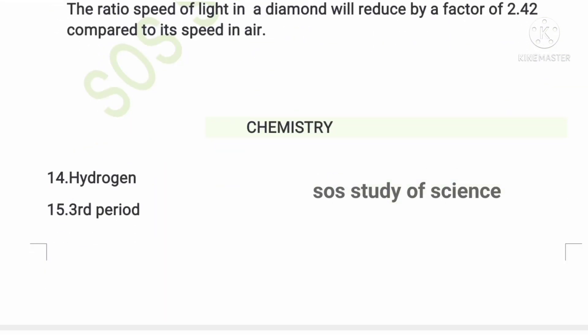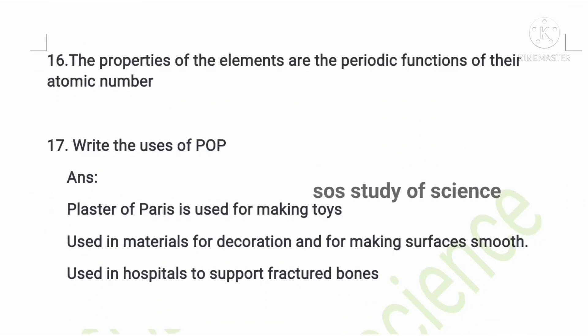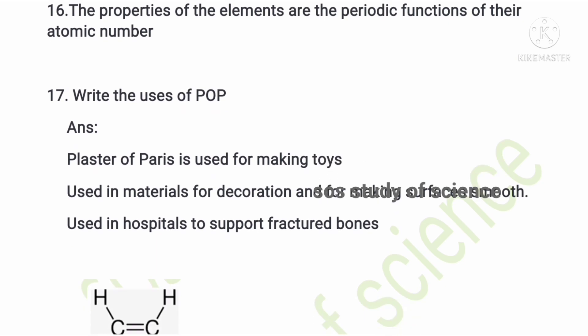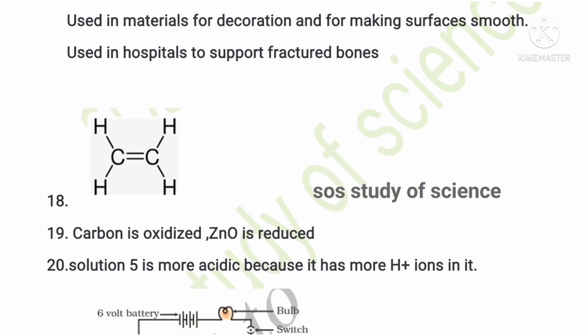Moving to the Chemistry part: the first question asks what gas is liberated at the cathode in electrolysis of water — the answer is hydrogen. The fifteenth question: chlorine has atomic number 17, and belongs to the third period in the modern periodic table. The modern periodic law states that properties of elements are periodic functions of their atomic number. Uses of plaster of Paris (POP): it is used in making toys and to support fractured bones at hospitals.